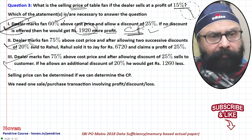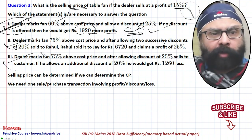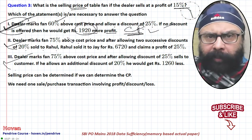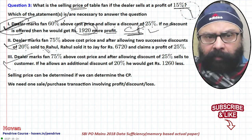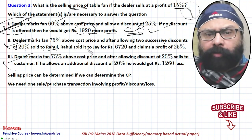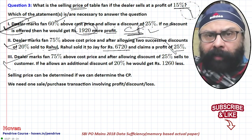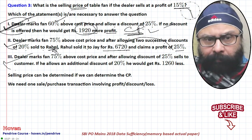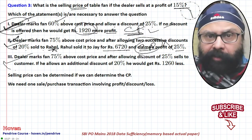Statement 2: the dealer marks the fan 75 percent above cost price and after allowing two successive discounts of 20 percent sold to Rahul. Rahul sold it to Jay for Rs. 6,720 at some profit. These two figures help us find the cost price to Rahul, and the unitary method gives us the cost price to the dealer. So statement 2 alone is also sufficient.